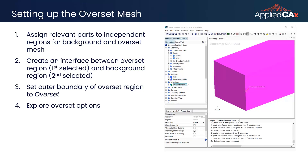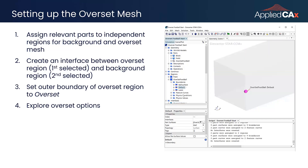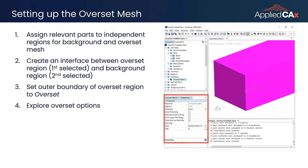Lastly, we go to the Overset region, identify the boundary that will be the outer boundary of the surface of the region that's going to interact with the background region, and set this to be an Overset boundary. We can also explore the many options available for an Overset interface, and we can dive into these in more depth in future videos.